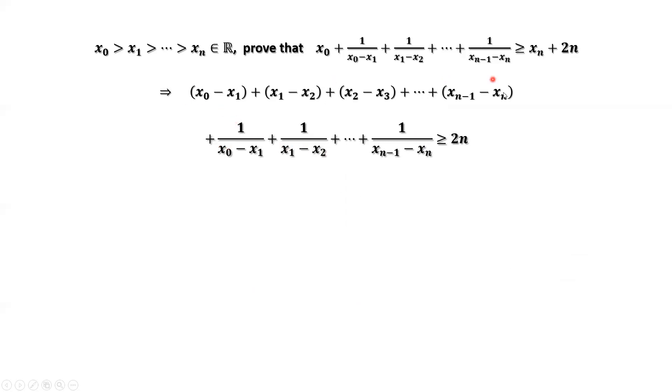Now look at the first part: x0 minus x1 plus x1 minus x2 plus ... plus xn minus 1 minus xn. This part we already derived is bigger than or equal to 2n. Now look at this. Let me mark it.